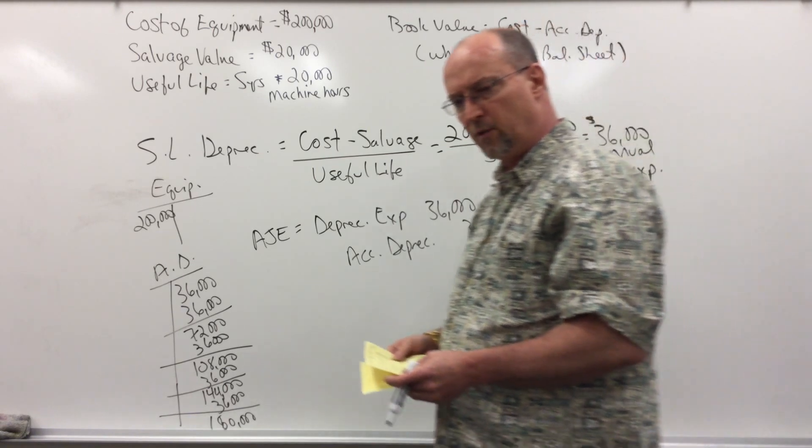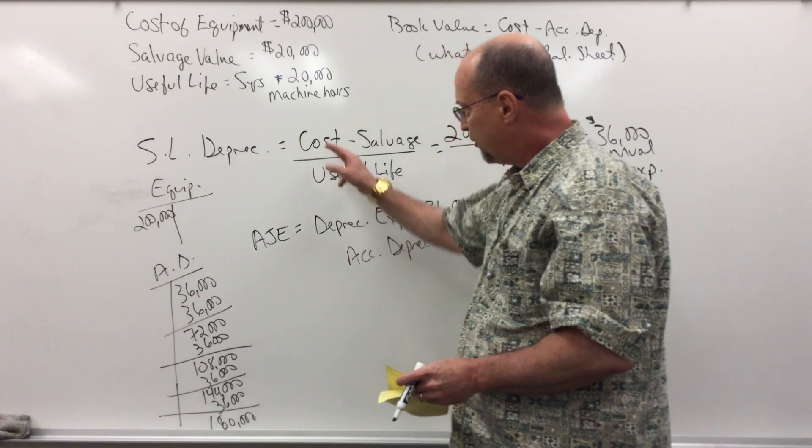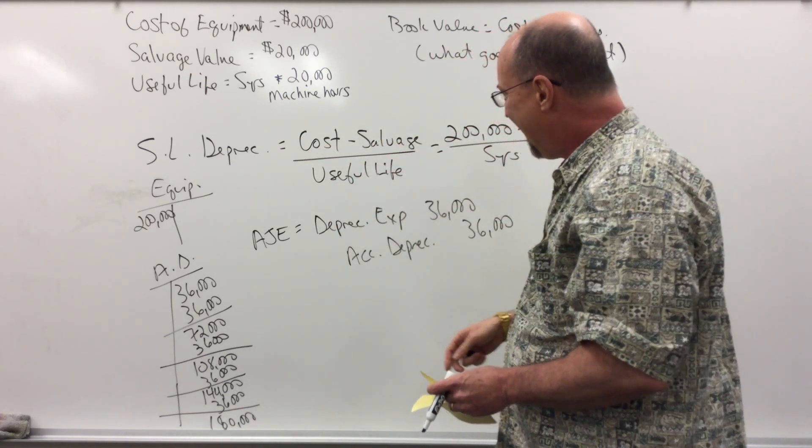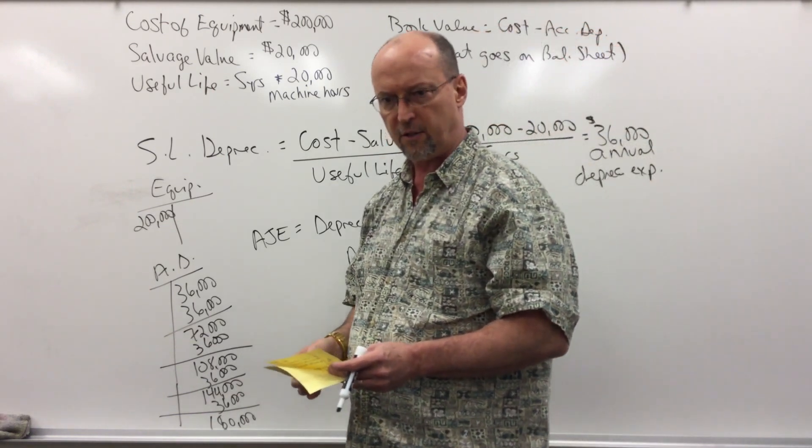That is how we do straight-line depreciation. Again, the formula is cost minus salvage value divided by useful life, and each year, we would record $36,000 of annual depreciation expense.